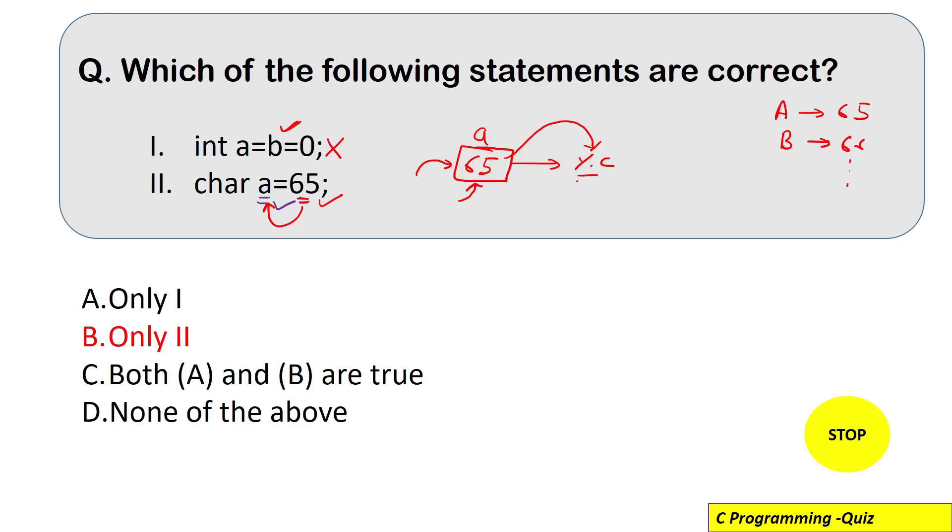And if you print this using percent C then character format with respect to your 65 that is A will be printed. And if you store here 66 then this percent C will give you capital B.